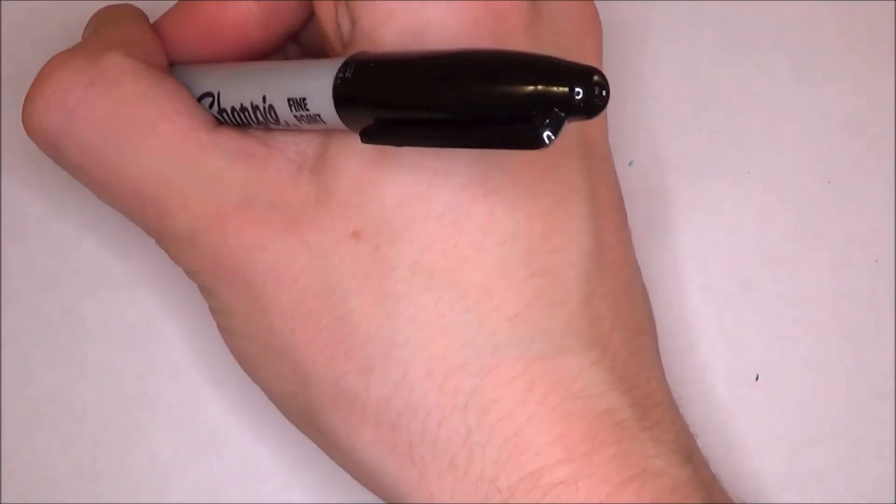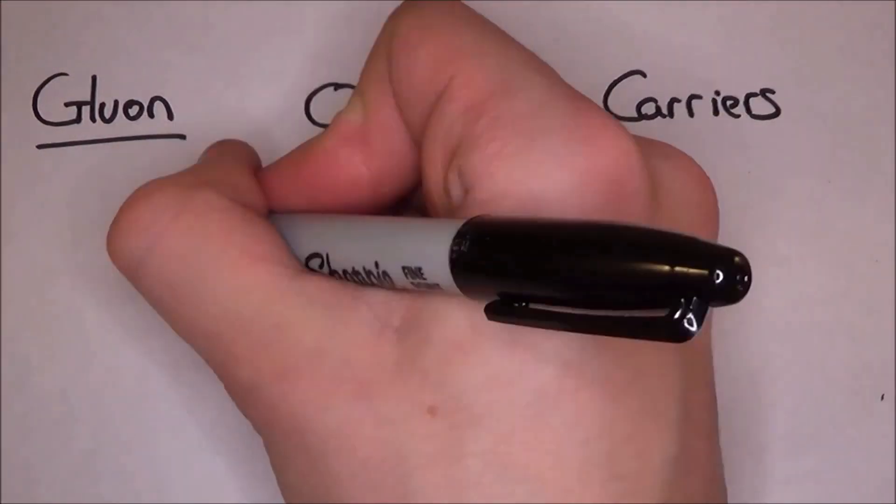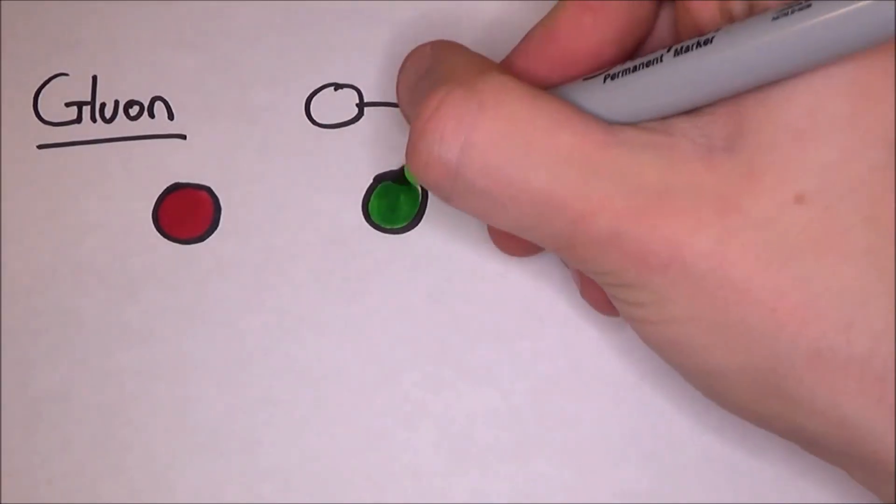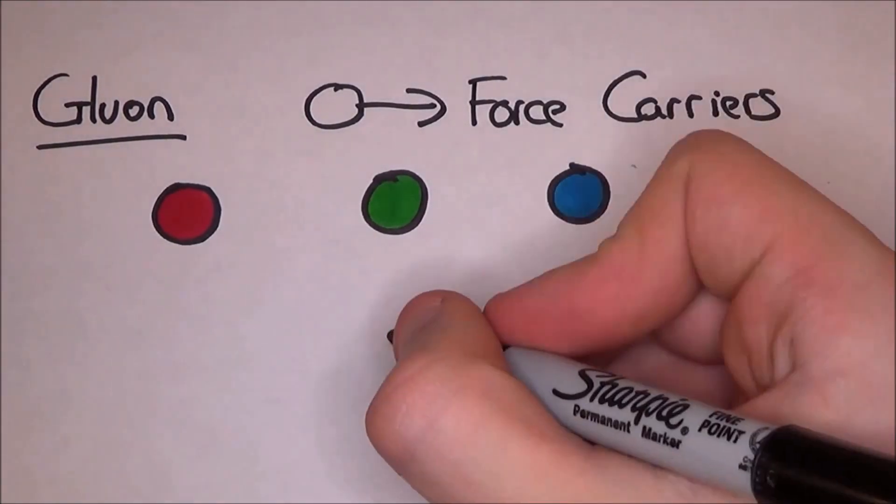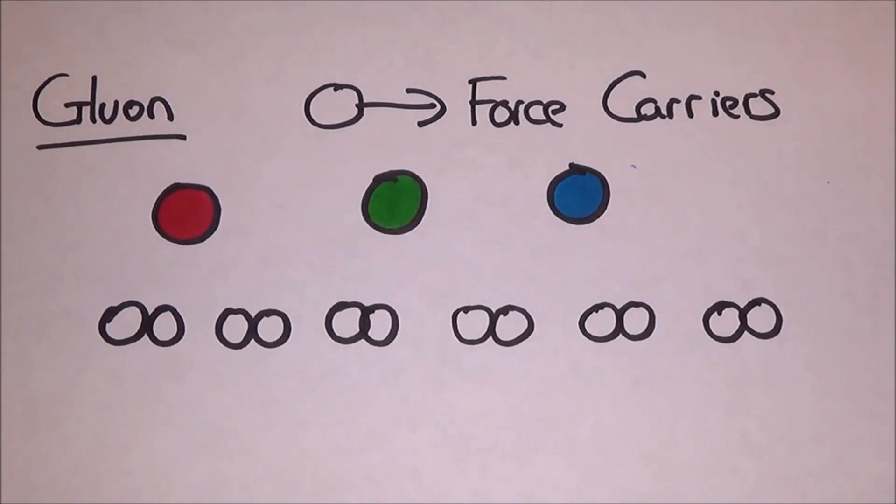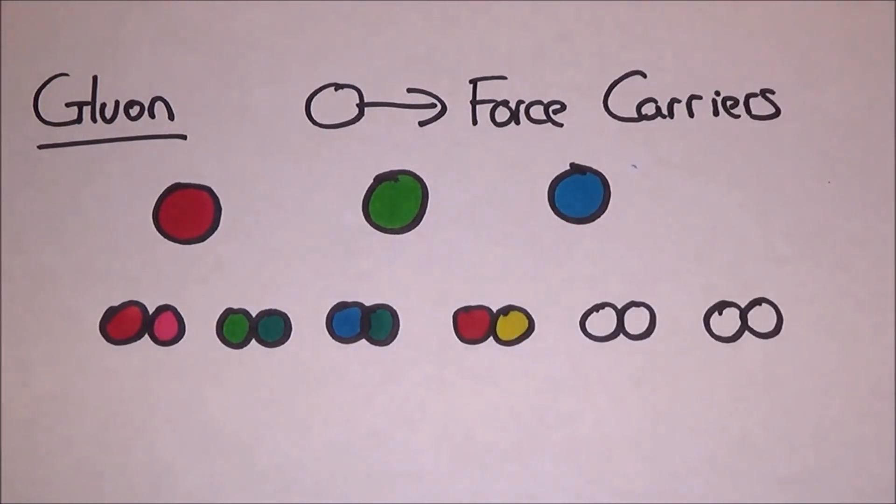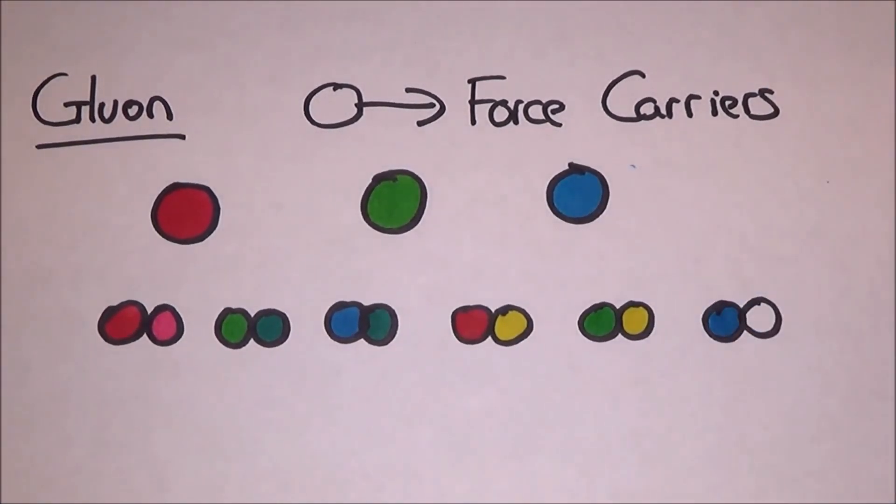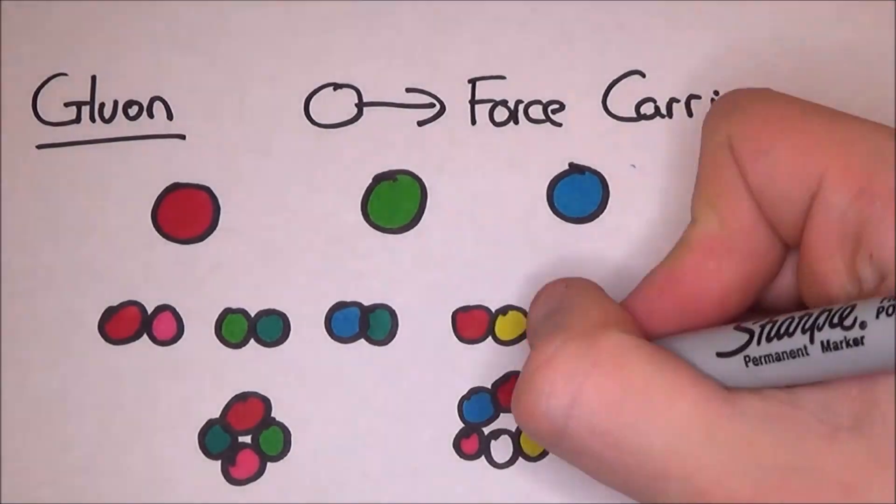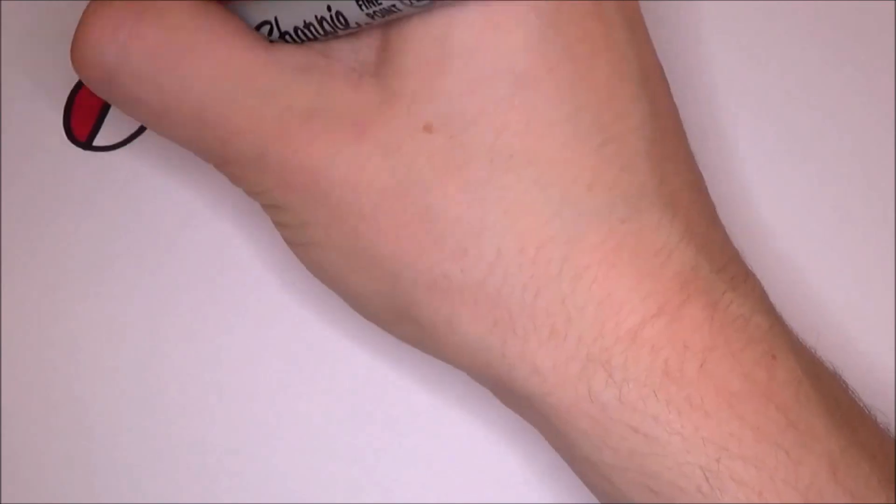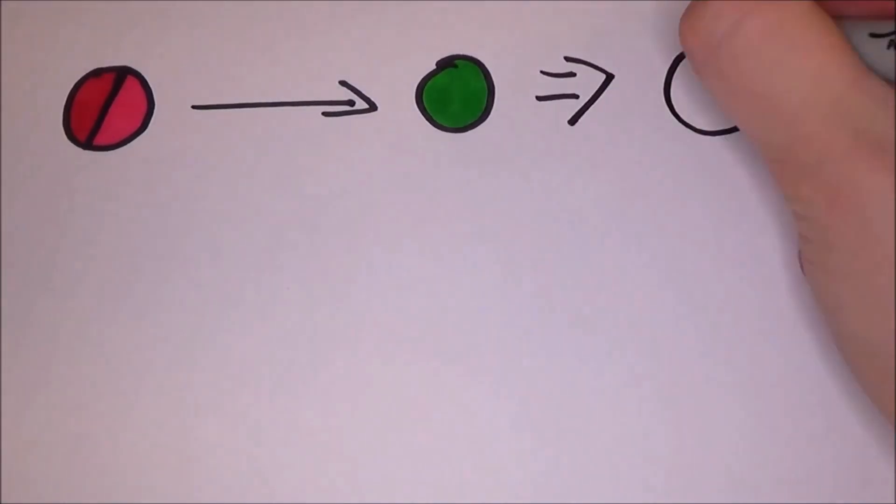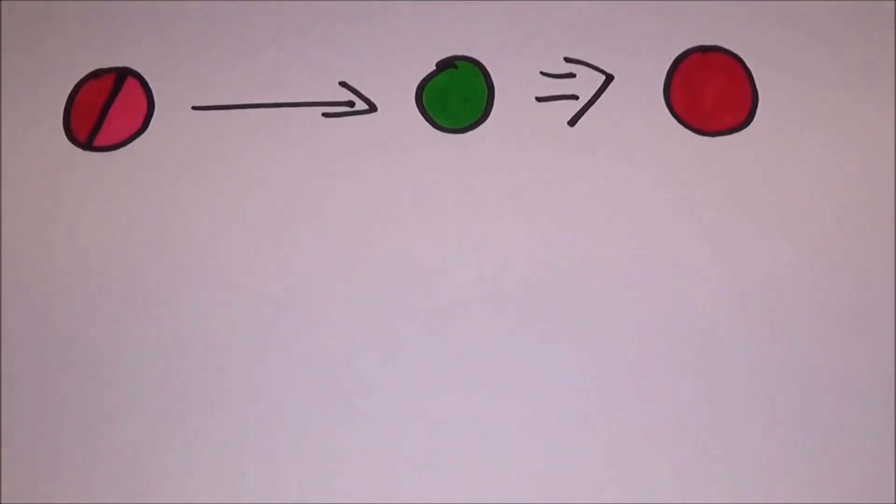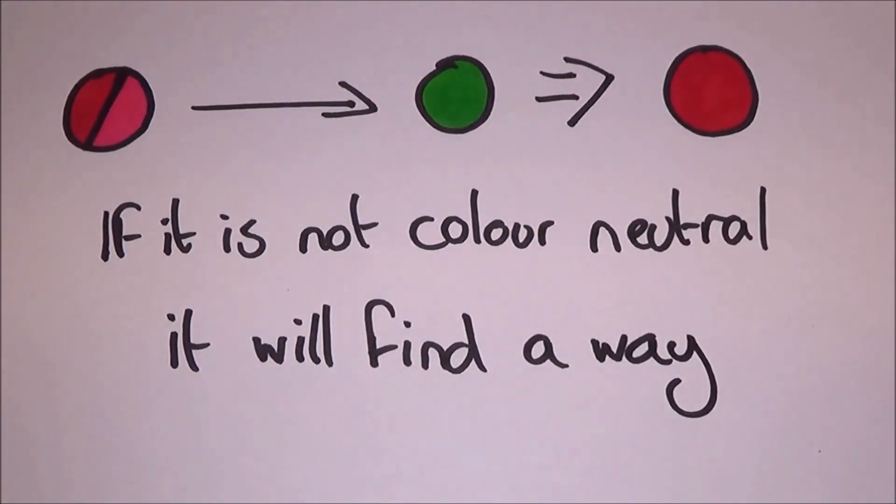This is where gluons, a form of boson, comes in and transmits their force. The colour is simple to remember. All quarks must have one red, one green and one blue. However, there are eight gluons, six of them have two colours, one of them has four and the last one has six. The combinations are red and anti-green, green and anti-red, blue and anti-red, red and anti-blue, green and anti-blue, blue and anti-green, red, green, anti-red and anti-green, and then all of them. Quarks can change their colour as they emit and absorb gluons, so the exchange of gluons maintains the proper colour distribution. Basically, if the colour isn't neutral, it will find a way to make it neutral.